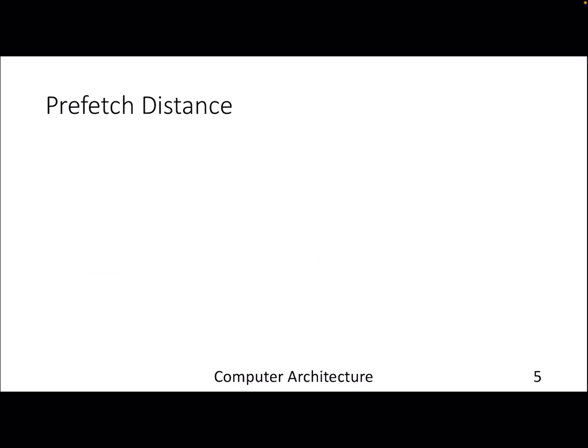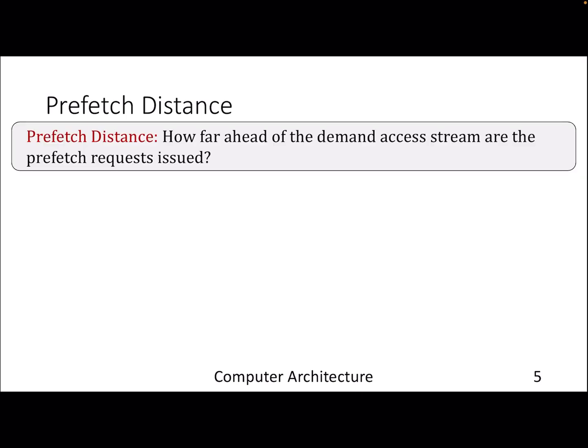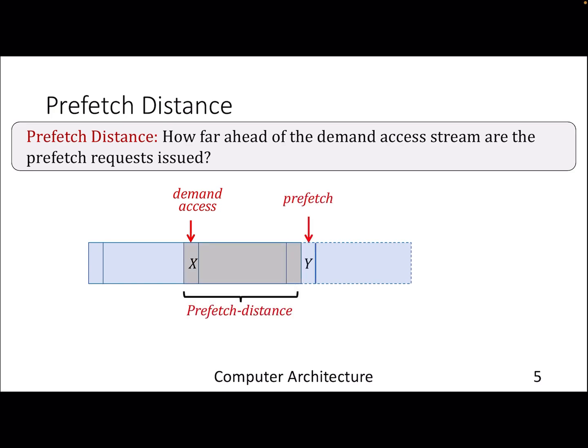The other knob is prefetch distance. It's also another form of aggressiveness metric that talks about how far ahead from the demand access we are issuing our prefetch request. To understand through an example: assume the demand access is to address x and the prefetcher is prefetching address y. The gap between y and x is the prefetch distance. So y can be x+4, x+8, x+16. If I'm saying y is x+16, that means my prefetch requests are triggered well ahead of time compared to x+4.